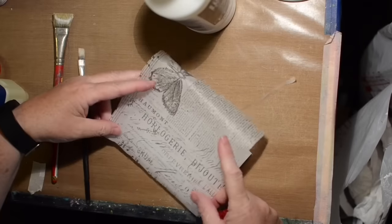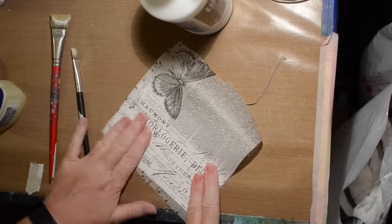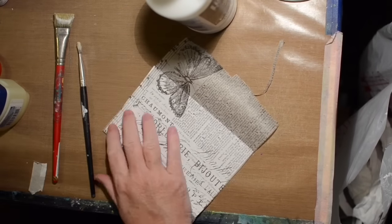The first layer I am putting down is Tim Holtz's tissue paper. I just really like the print, and since this is going to look like torn pages, it's good to have some text in the background.